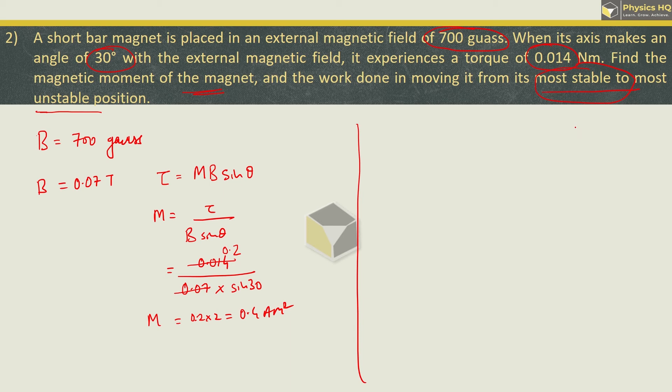Now, remember this. We have discussed this in the first part. If the magnetic field is in this direction, the magnet will align itself in this direction. And this is the most stable position, where potential energy is minimum.